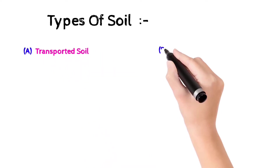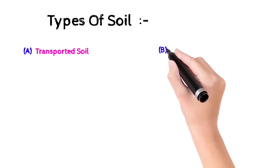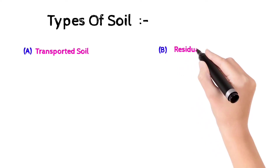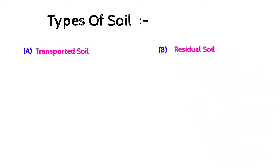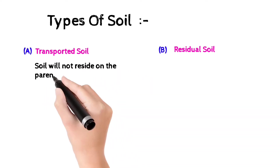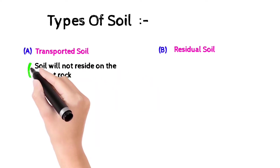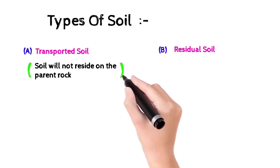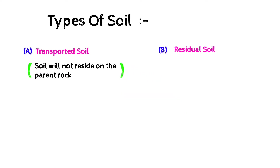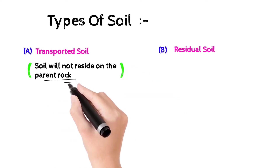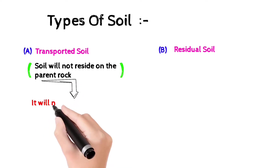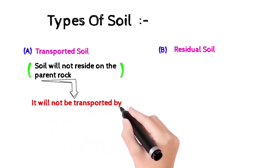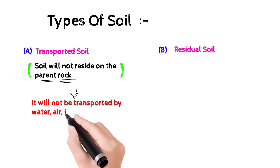The first one is transported soil. What is transported soil? The soil will not reside on the parent rock. After disintegration and weathering, the soil will not stay at the parent rock. It will be transported by water, air, ice, and by gravity.